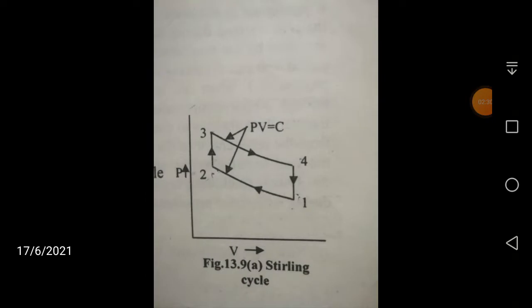This can be compared with the Stirling cycle. The PV diagram is similar to your Otto cycle, but here 1 to 2 is isothermal compression, 2 to 3 is constant volume heat addition, 3 to 4 is isothermal expansion, and 4 to 1 is constant volume heat rejection. Comparing both cycles, the processes 1 to 2 and 3 to 4 are different: in the Otto cycle, compression and expansion follow PV^γ = constant (reversible adiabatic), whereas in the Stirling cycle, it is PV = constant, that is reversible isothermal expansion and compression.